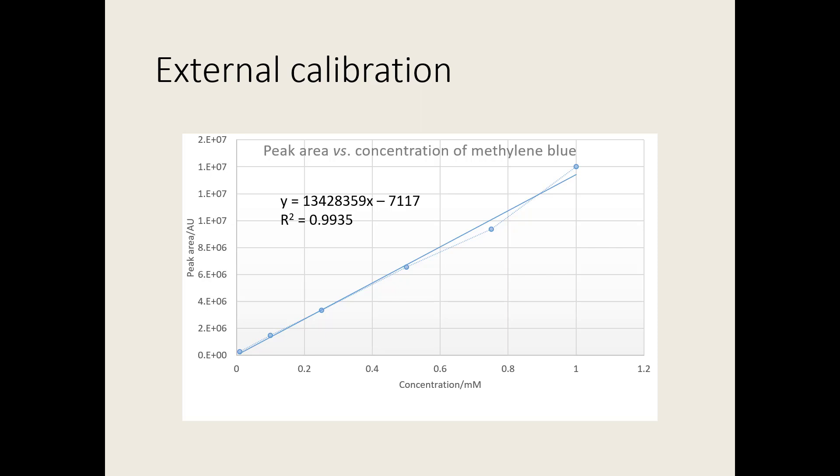If you're plotting the graph in Excel, you can display the regression equation and r-squared value on the graph. In this case, the r-squared value is moderately good, at 0.9935. You can see that two of the points are not quite on the regression line.